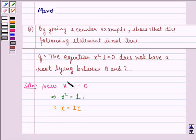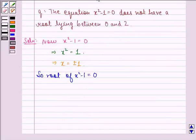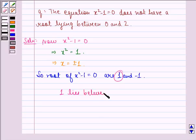So, the roots of x² - 1 = 0 are 1 and minus 1, of which 1 lies between 0 and 2. So, 1 lies between 0 and 2.